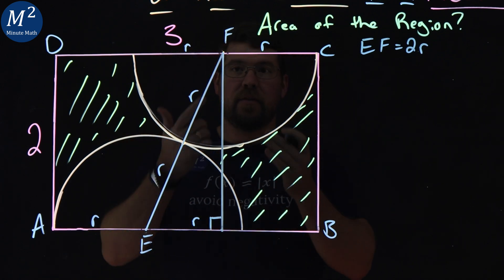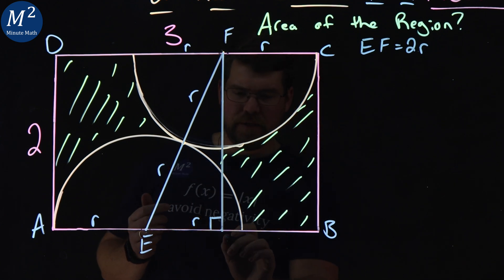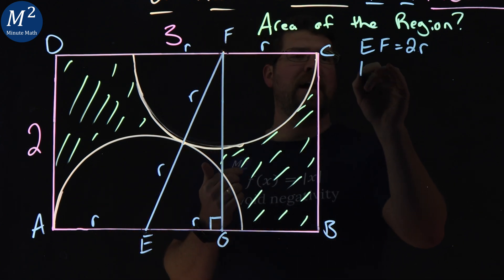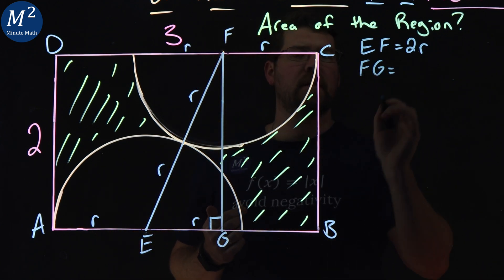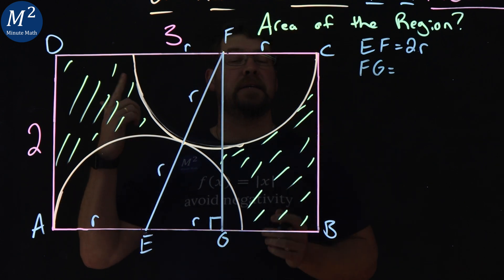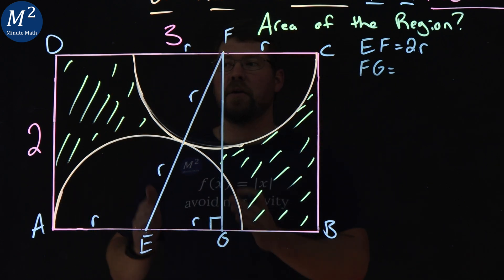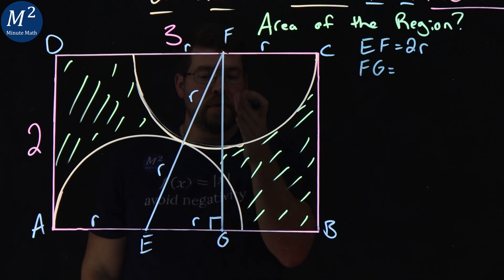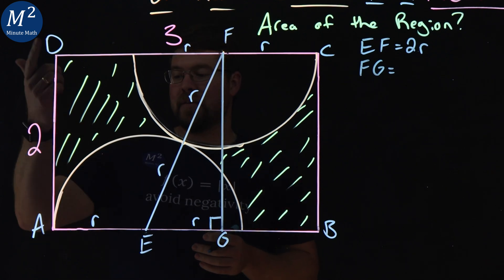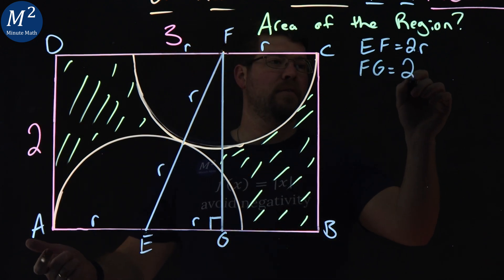And that's going to be a right angle. Now what is the side length? It's going to be a point here. Let's call it G. What is the length of FG? Well, since ABCD is a rectangle, we got a right angle here. We have another rectangle on the inside. That's how we drew it. FG is going to be the same length as DA, which is 2.